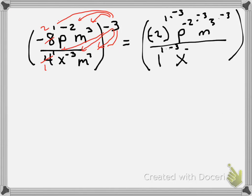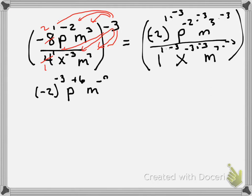So rewriting: negative 2 has a 1 times negative 3 exponent. The P is negative 2 times negative 3, which makes a positive 6 exponent. The M has 3 times negative 3, which makes a negative 9 exponent. The 1 on the bottom has a 1 times negative 3, which is negative 3. And X has a negative 3 times negative 3, which is a positive 9.